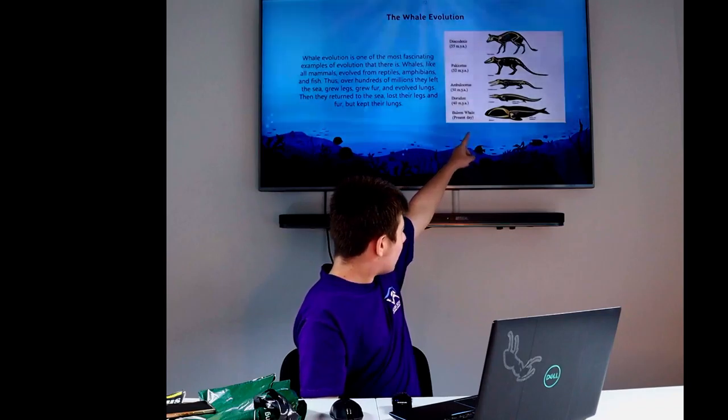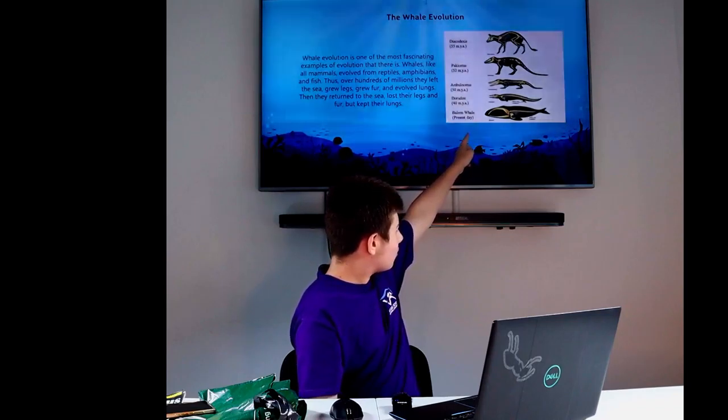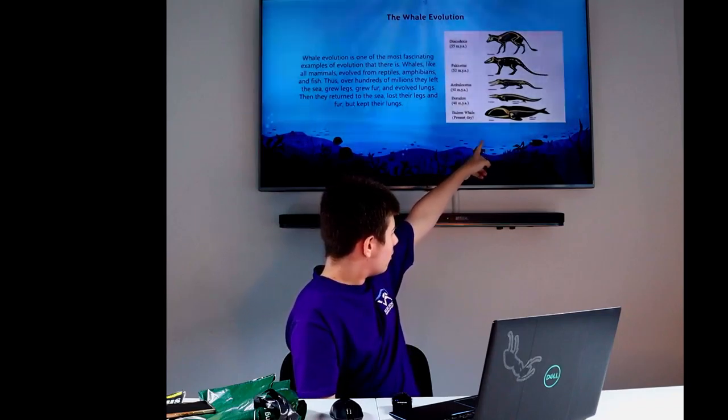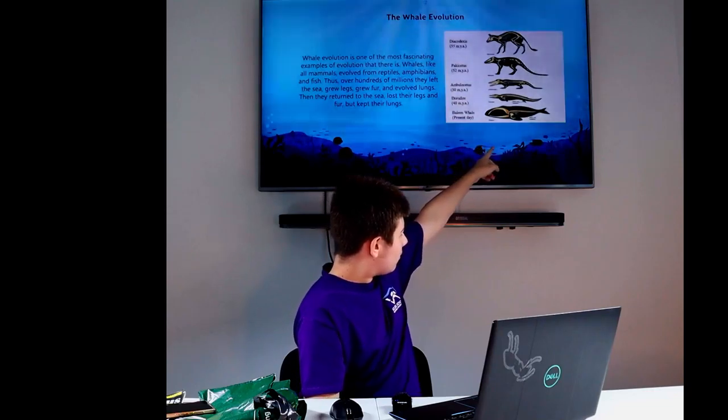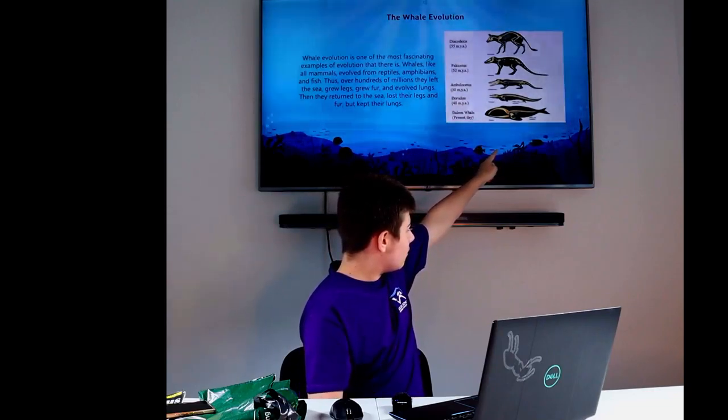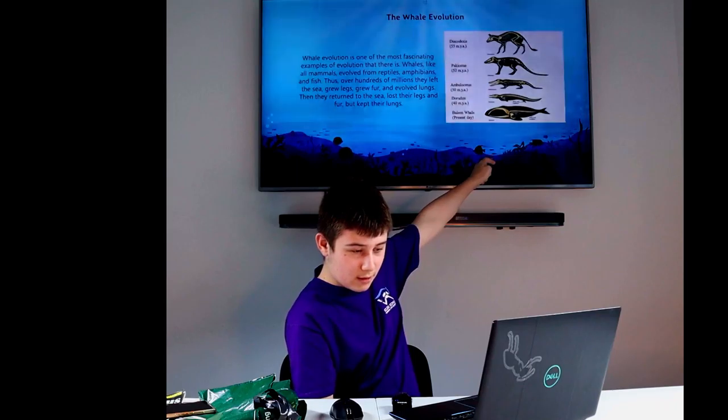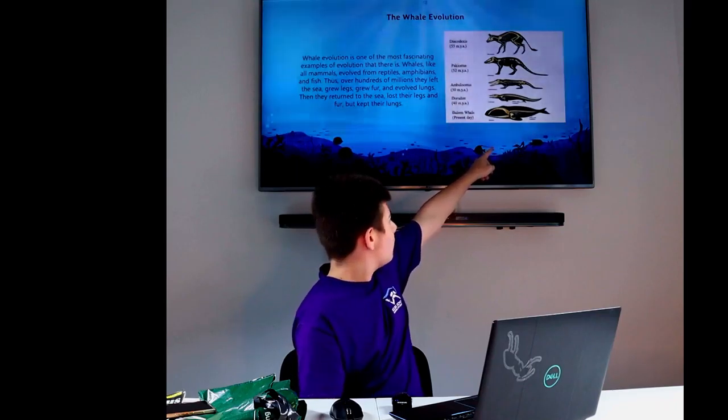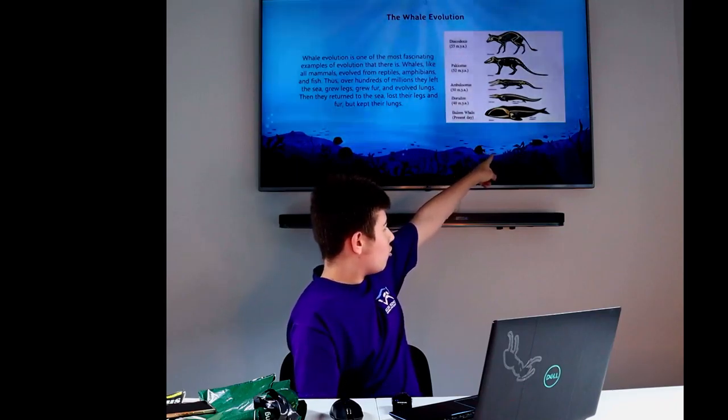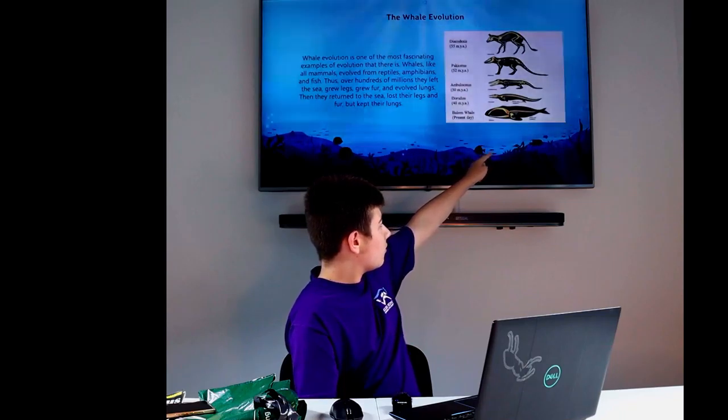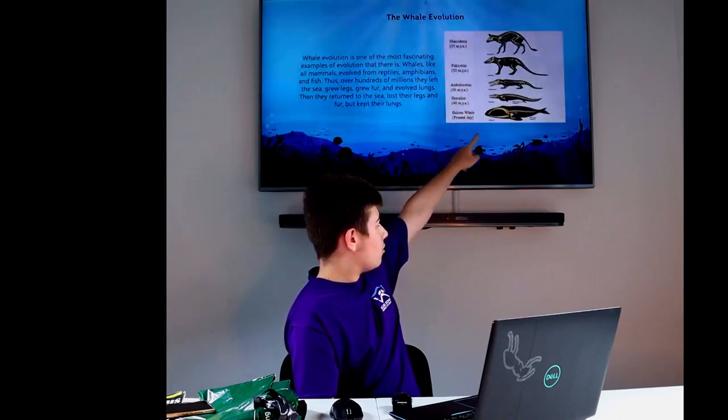It goes from, so right where it starts getting a longer skeleton and then right there, you can see just above where the spine is, you can see a little bone structure. That would have been its hind legs from all the evolution down to the whale.